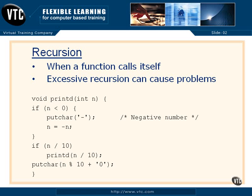Recursion is when a function calls itself. Here we have, right out of K and R, a little function called printd. Now, printd takes in an integer n and it's going to print it out as a decimal. We know that printf does that for us, but we like to reinvent the wheel around here.